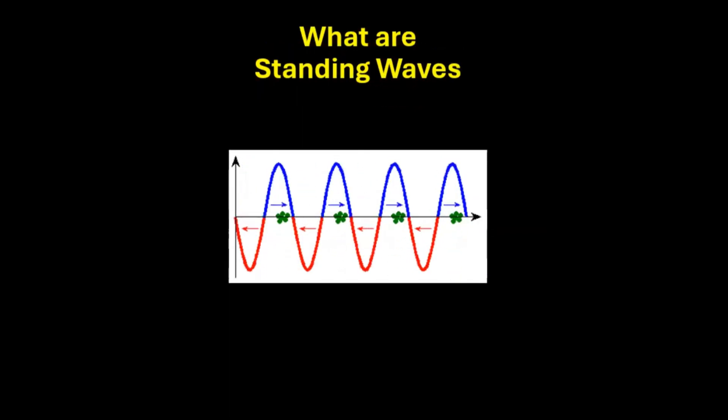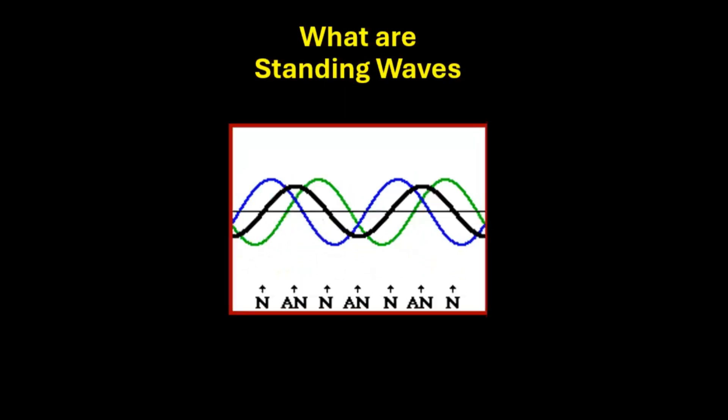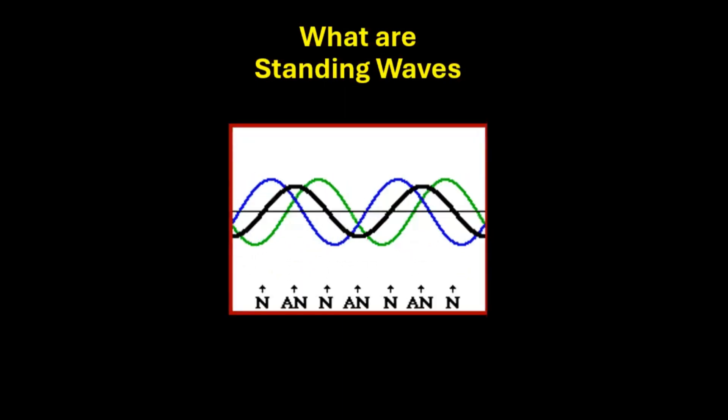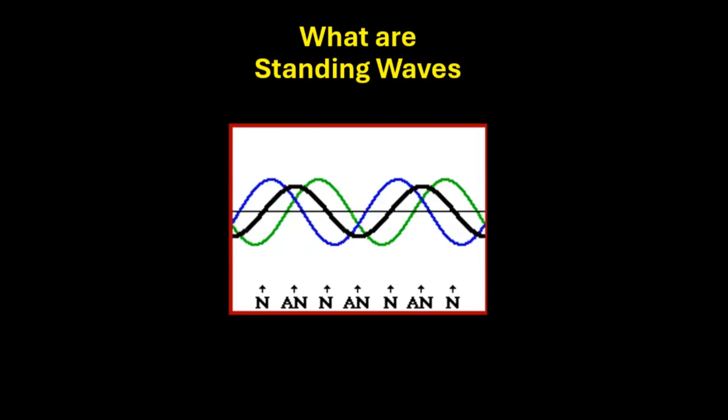A standing wave, as you can see, doesn't move further. It is stationary and keeps oscillating in the same place. The standing wave is made of two parts: the node, which is the part of minimum displacement, and the antinode, which is the part of maximum displacement.